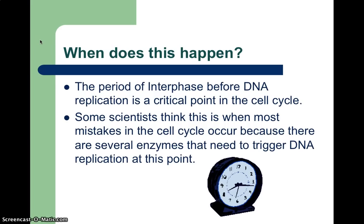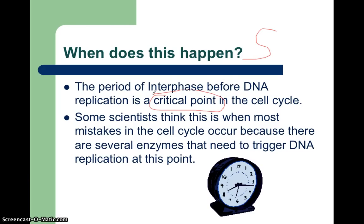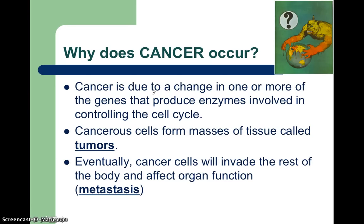When typically does this uncontrolled cell division happen? Some scientists have hypothesized that the period of interphase just before DNA replication — that's the S phase of interphase — is a very critical point in the cell cycle. A lot of scientists think it's right around this time that if any sort of mutation happens, meaning any kind of damage to any of the DNA, it could trigger this uncontrolled cell division. And as said, a lot of times these cancerous cells form tumors.